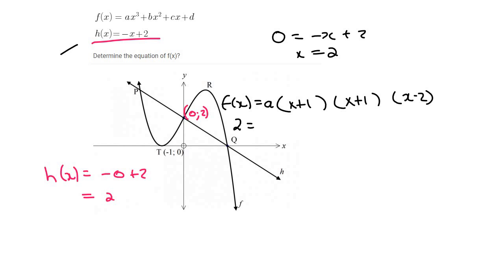So we can say 2 = a(0+1)(0+1)(0-2). And so that's going to be 2 = a times all of these numbers multiplied together, which is just going to be -2. And so a would equal -1.